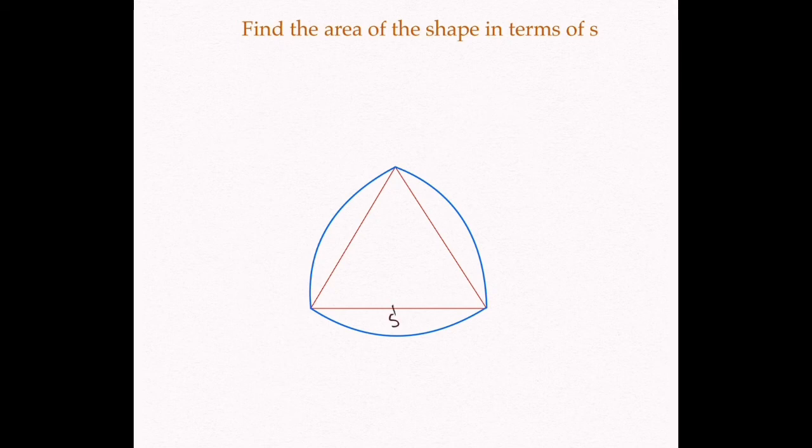where S is the side length of this equilateral triangle. Also, each of the three blue curvy lines are arcs of three different circles. The shape below, the blue part, is actually called a Reuleaux triangle, which is a very interesting shape. I have a Wikipedia link in the description if you want to read more about it. It has some cool properties.